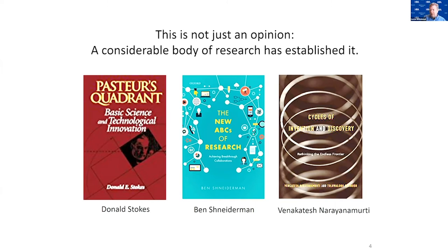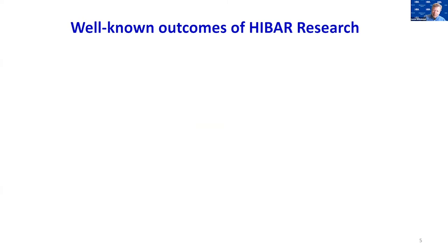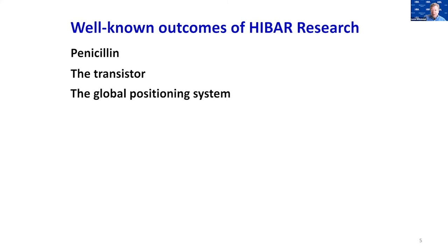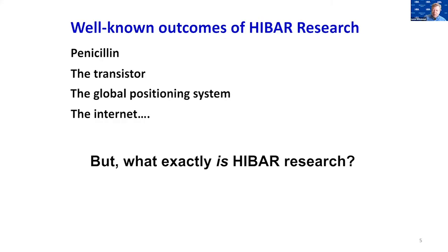What's less clear is how we can achieve more of these good things. There are really well-known examples of HIBAR research — it has been around forever. Some famous examples from the last century are penicillin, the transistor out of Bell Labs, the global positioning system, and the internet itself. All of these trace back to HIBAR research projects that were highly impactful, and there are highly impactful HIBAR research projects happening today. The question is, can we enhance that?